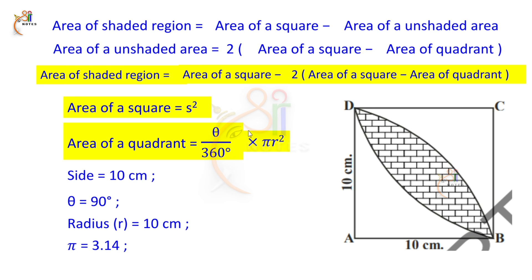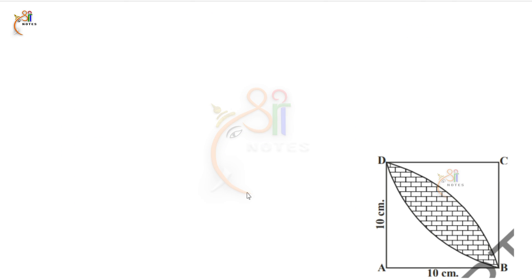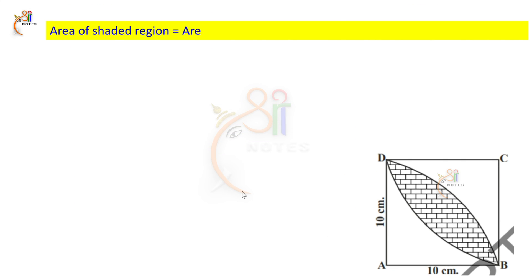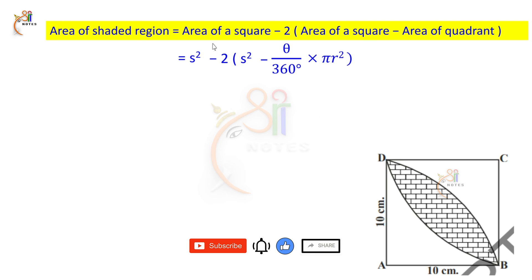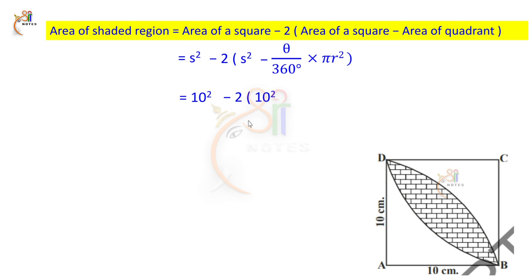So: area of shaded region = 10 squared minus 2 into bracket 10 squared minus 90 by 360 into 3.14 into 10 squared. 10 squared is 100. Simplify 90 by 360: cancel zeros, giving 1 by 4. So we have 1 by 4 into 3.14 into 100.